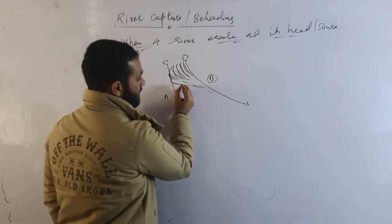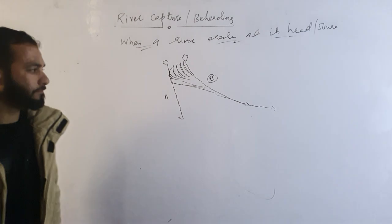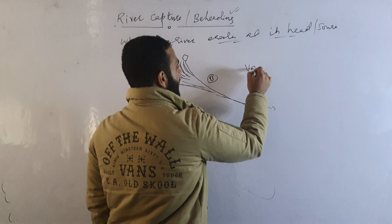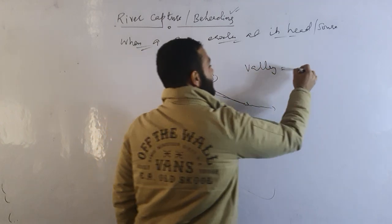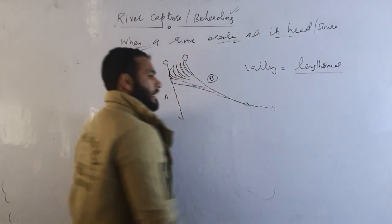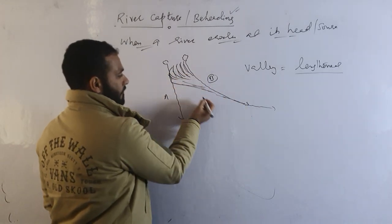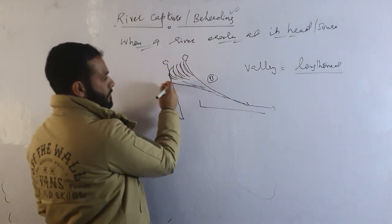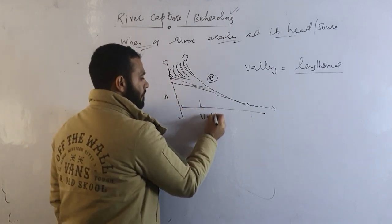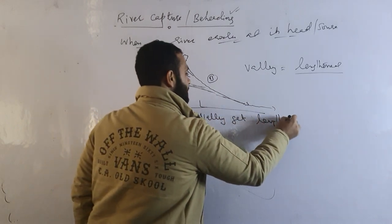When this beheading occurs, the river continuously erodes and captures the other river, causing it to flow in a new direction. Because of this beheading, the valley gets lengthened. First the valley was smaller, but after capturing the other river's area, the valley's length increases.